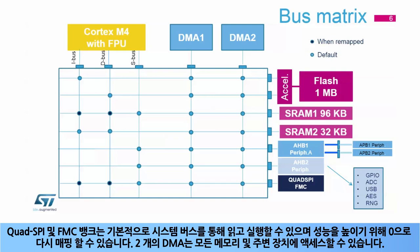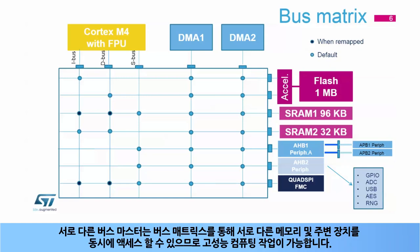The two DMAs can access all memories and peripherals. Different bus masters are able to access different memories and peripherals simultaneously via the bus matrix, enabling high-performance compute operations.